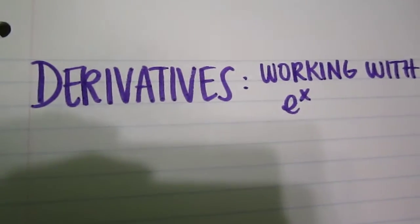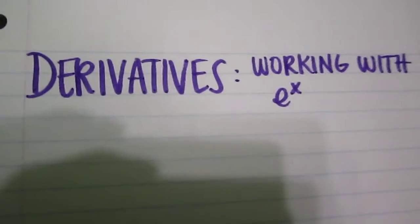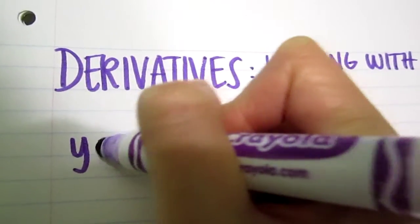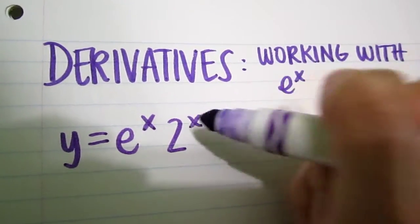Okay, I'm going to do a problem on finding the derivative involving e to the x. So say you're given y equals e to the x times 2 to the x.